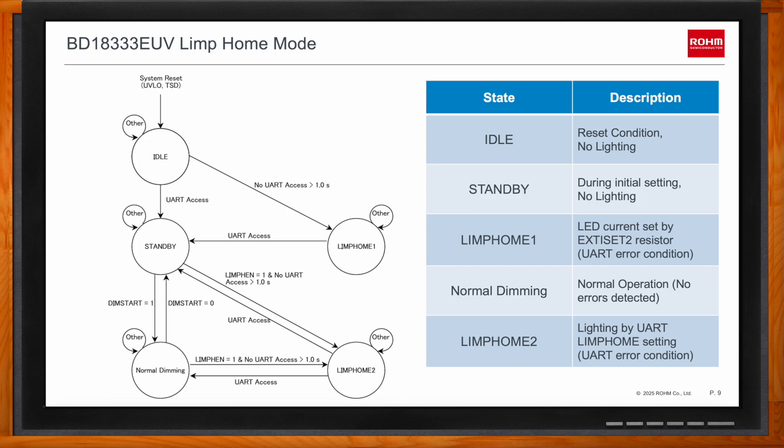In some cases, the car manufacturer wants no lighting at all in limp home mode — which would make it very obvious that the taillight or headlight needs to be replaced. If that's the setting required, the external resistor on the XD Set 2 pin simply isn't populated at all.